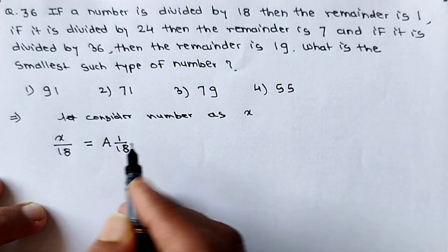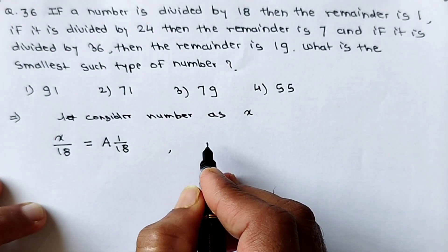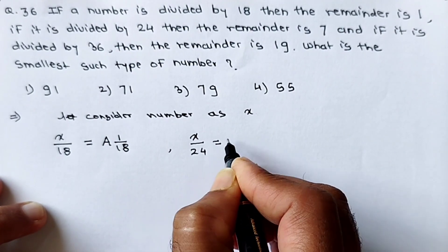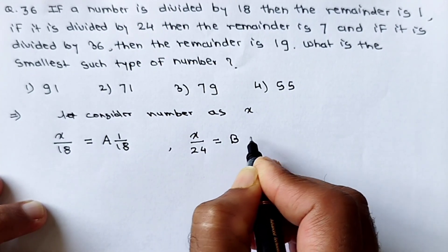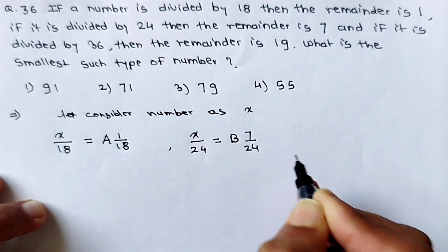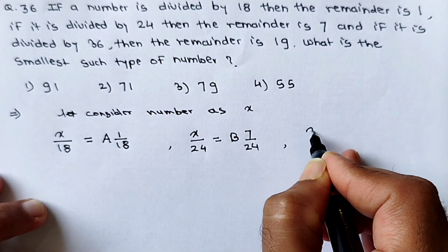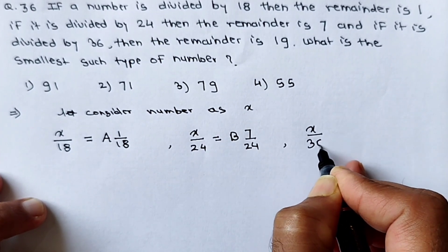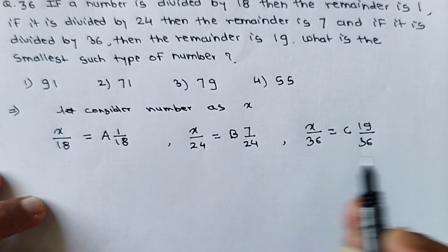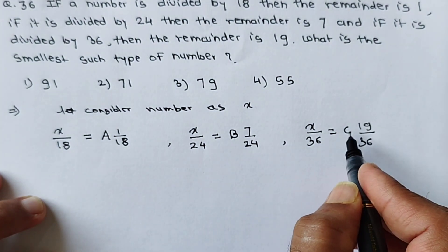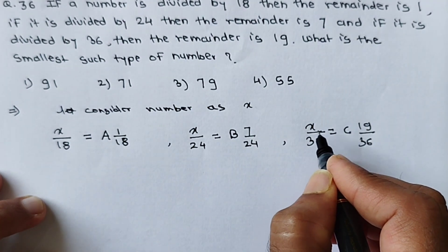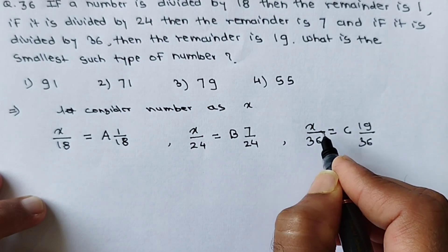Similarly, in the second statement, if x is divided by 24, the whole number quotient is b and remainder is 7, so 7 upon 24. And the third statement: x divided by 36 gives whole number quotient c and remainder 19, so 19 upon 36. Here a, b, c are whole numbers and 1, 7, 19 are remainders.